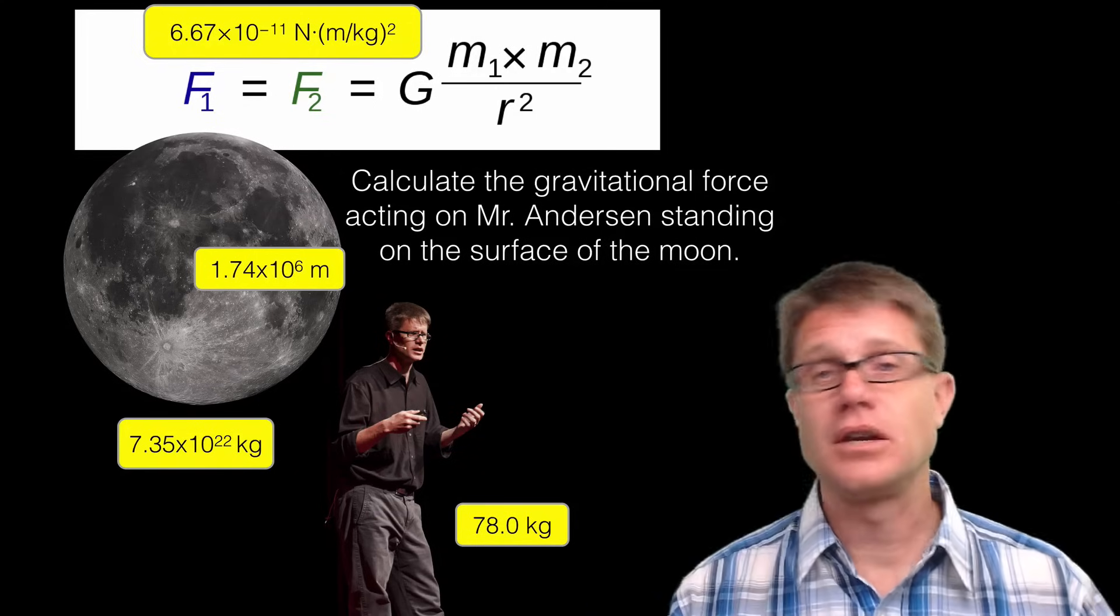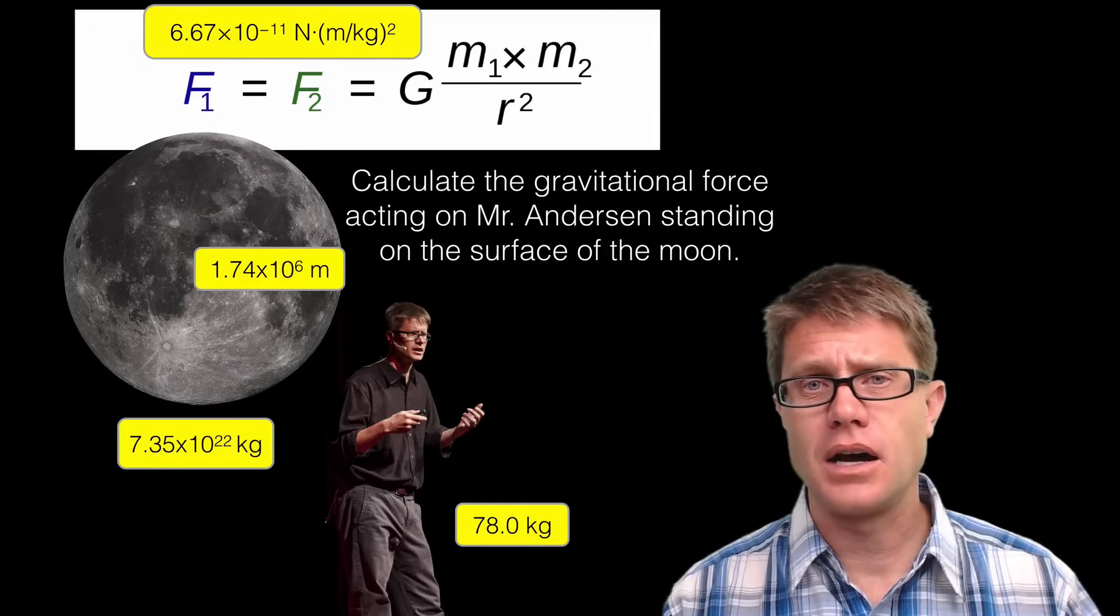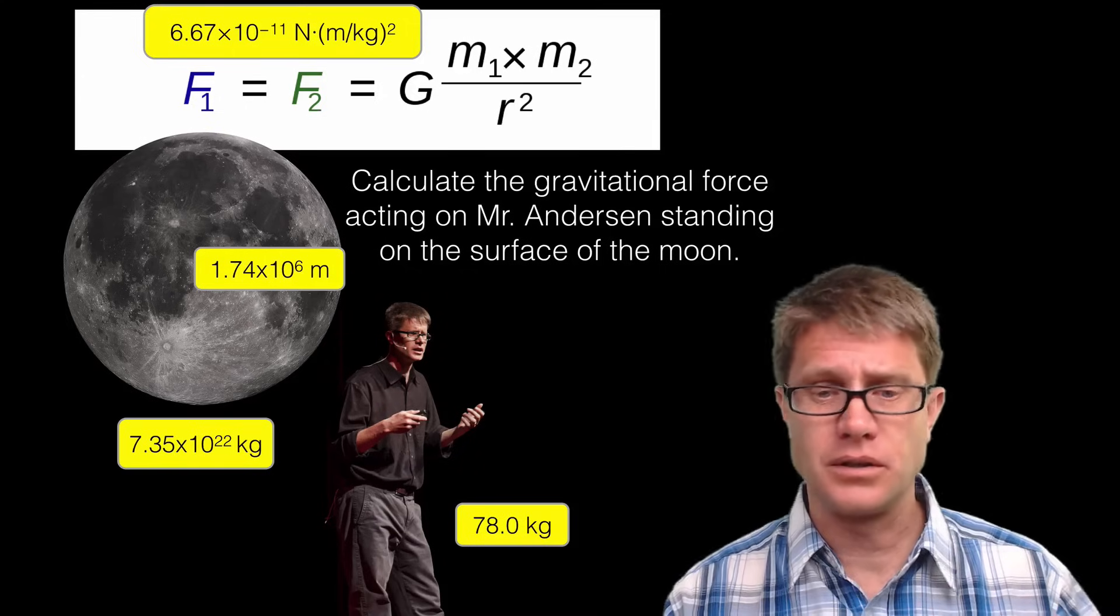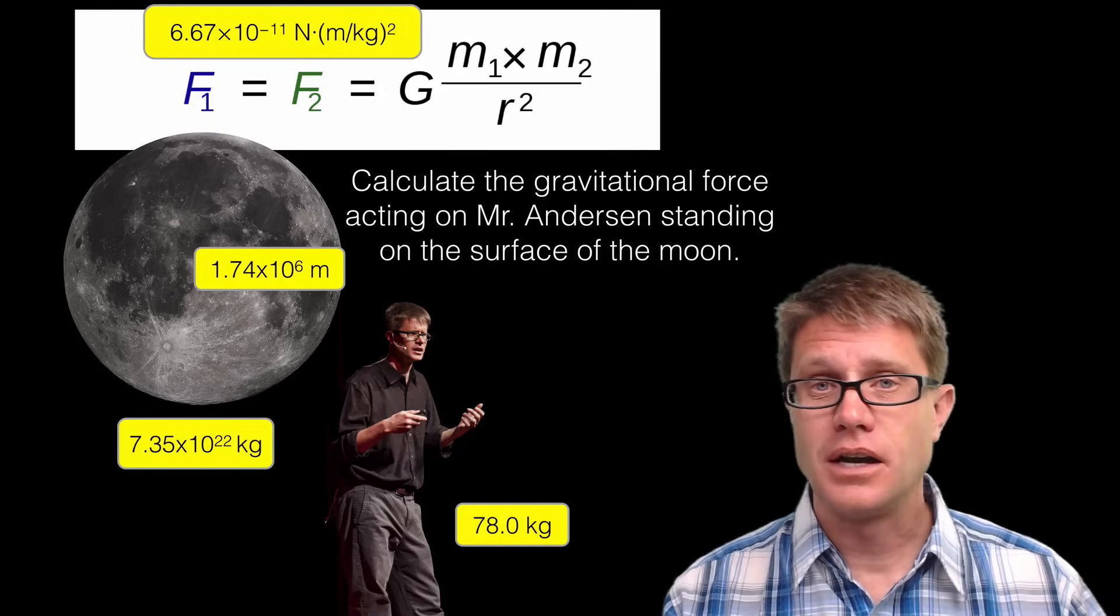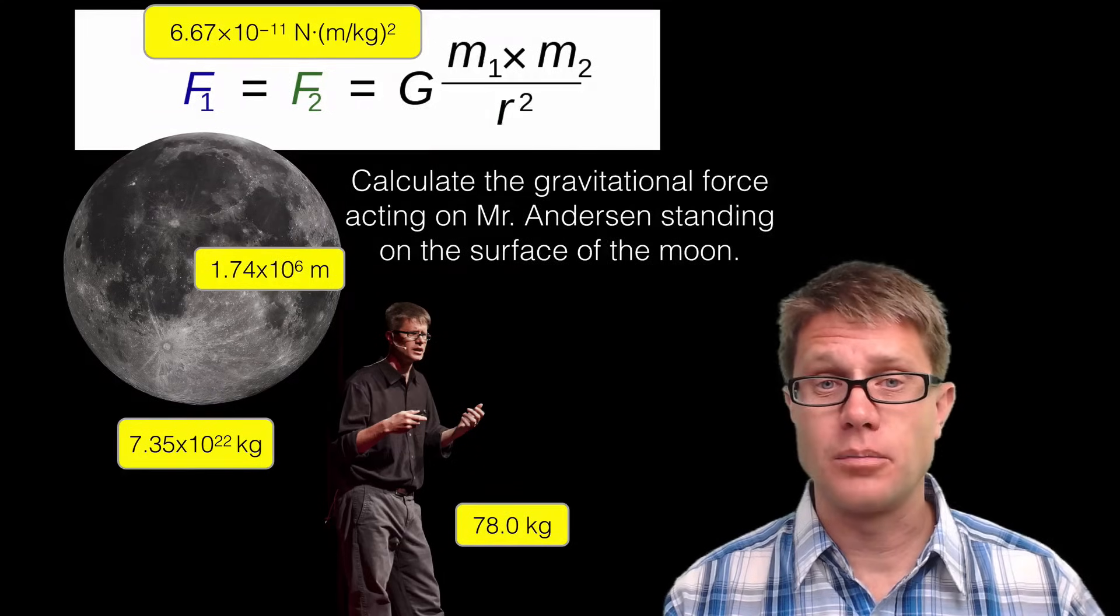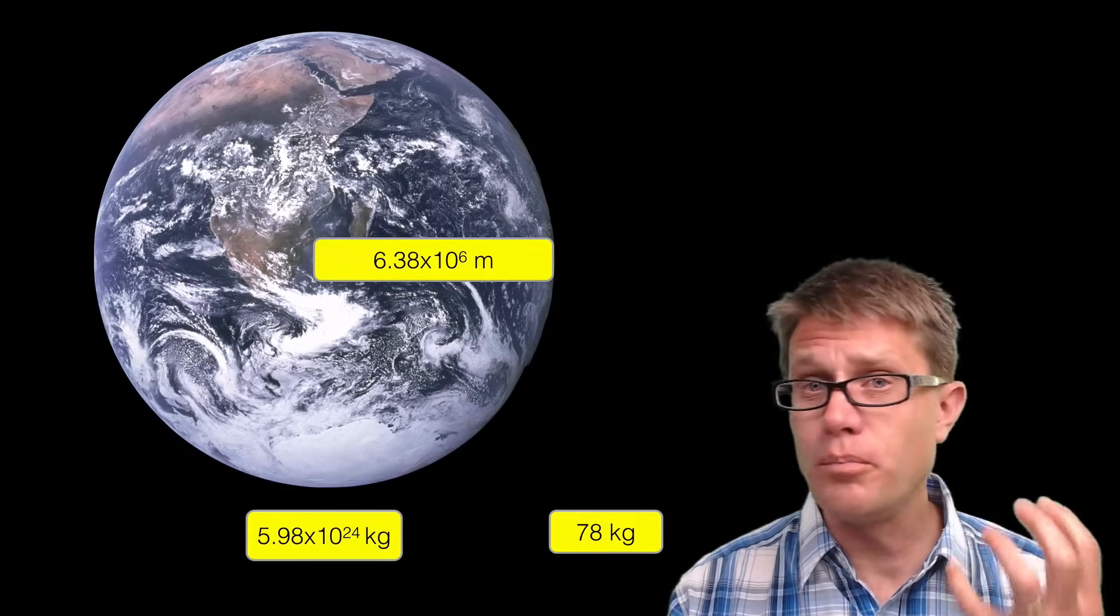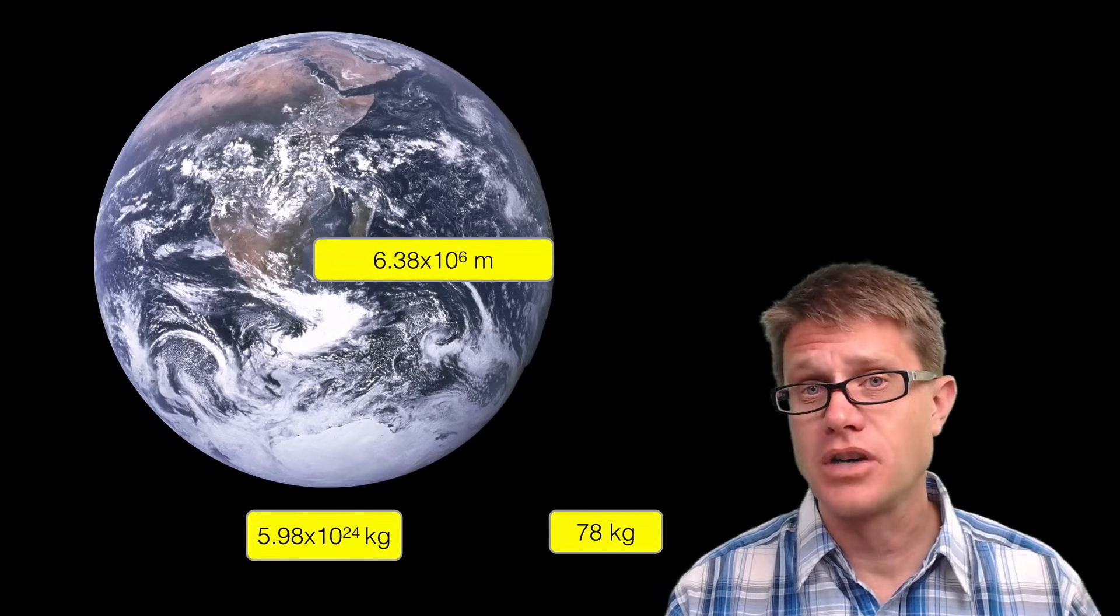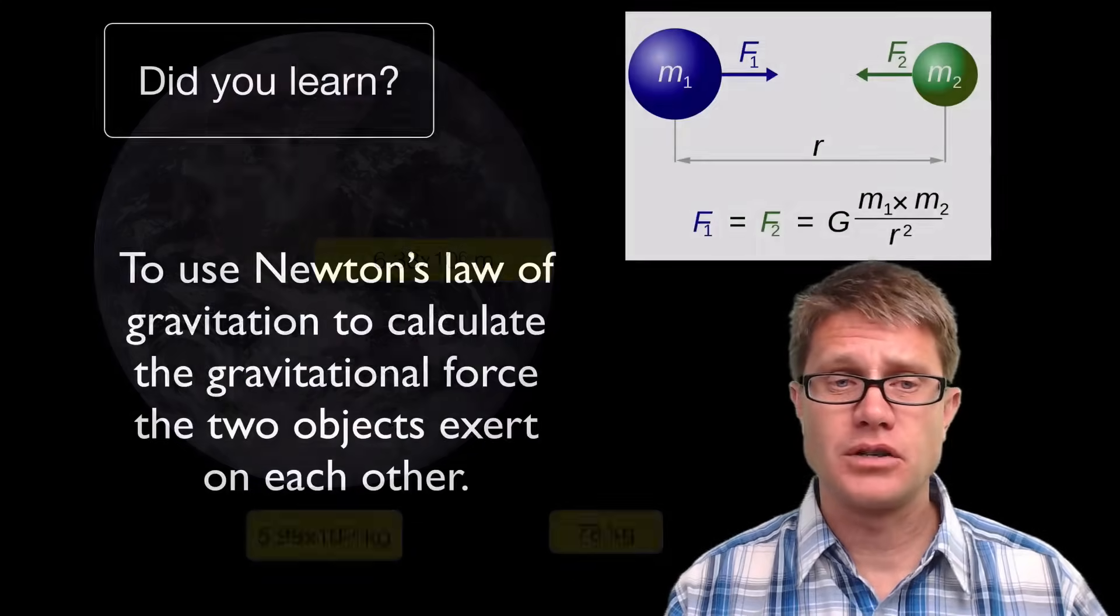And so what you should do is use this universal law of gravitation to calculate what that force is. I will put it down below in the video description so you can figure that out. And if you know anything about Newton's second law of motion, you could simply divide that force by the mass and it is going to give you the acceleration. And it should be a sixth of what it is on our planet. Now what is interesting about our planet is that the mass of the earth is so big and the distance is so large that in this narrow band on the surface of the earth it really does not change that much.